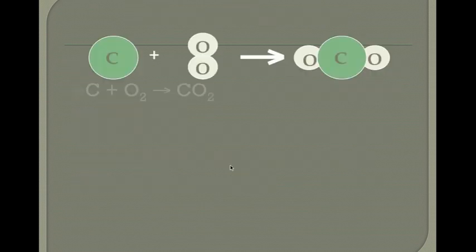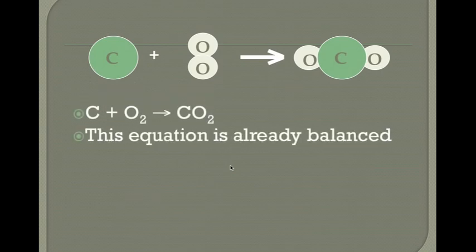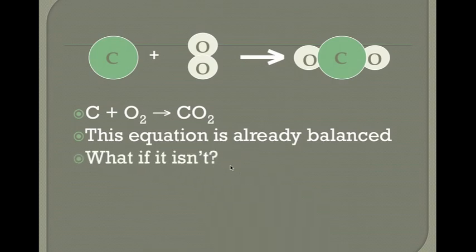For this example, we have carbon reacting with oxygen gas and it produces carbon dioxide. If we look, this equation is already balanced because we have carbon on both sides, and we have two oxygens on both sides as well. So it's already balanced — we don't need to do anything to it.